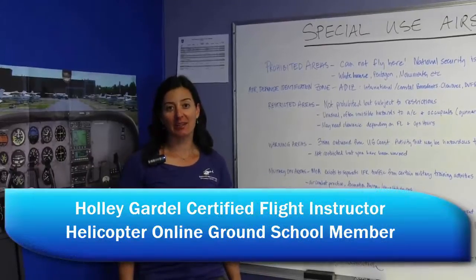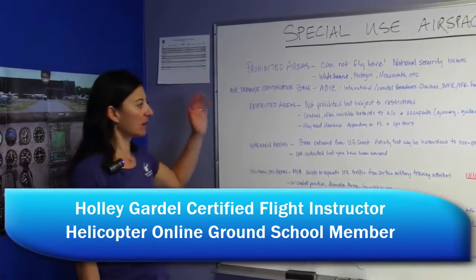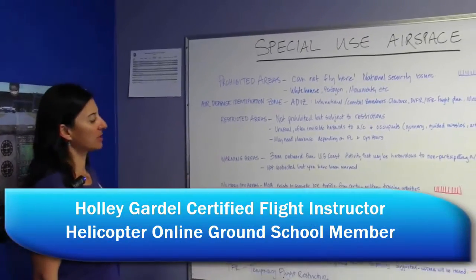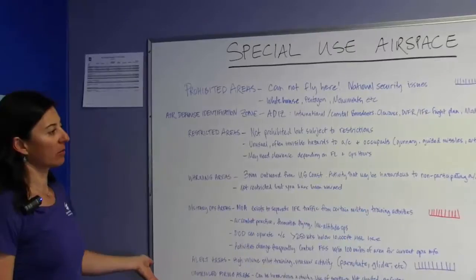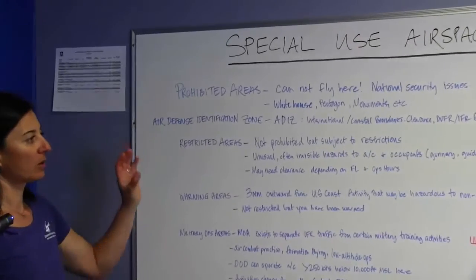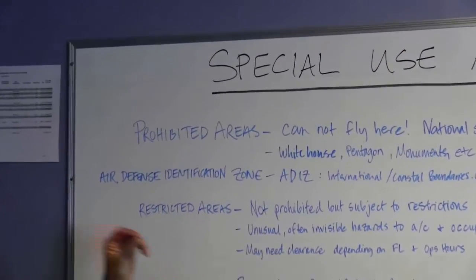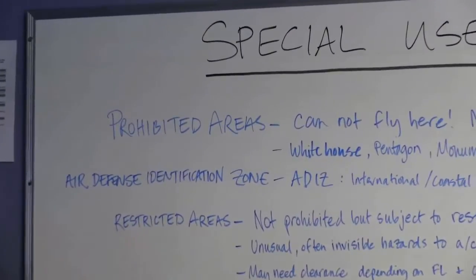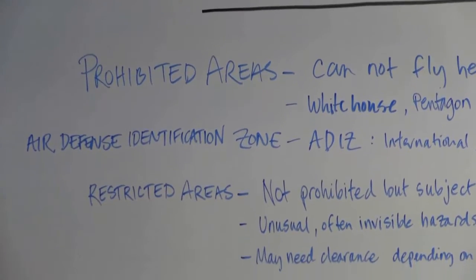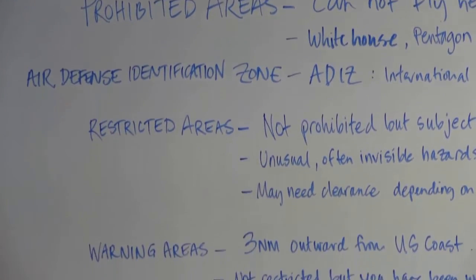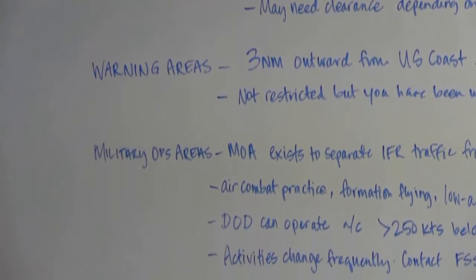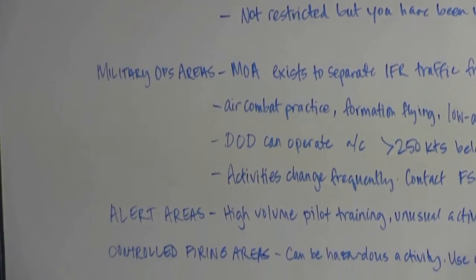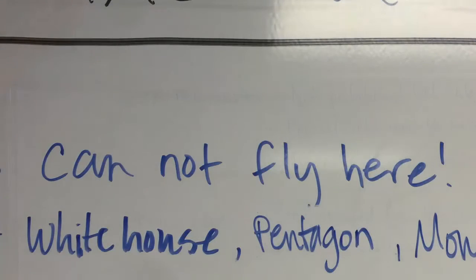We're going to continue the airspace lecture now by covering special use airspace. I've written several different types of special use airspace on the whiteboard with a legend and depiction. I'm going to cover each one and then we're going to go to a sectional so you can see what it looks like. Let's start with the first: prohibited areas.